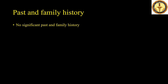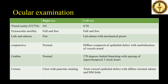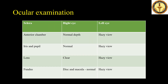His past and family history were non-significant. On systemic examination, he was conscious, oriented to time, place and person, and the rest of the examinations were within normal limits. On ocular examination, visual acuity in the right eye was 6/6; however, in the left eye it was 6/36. In the left eye there was significant lid edema with mechanical ptosis, diffuse conjunctival epithelial defects with marbleization of the vessels, 270 degrees of limbal blanching with sparing of the supero-temporal region for 3 clock hours, and total corneal epithelial defect with diffuse stromal edema and Descemet's membrane folds, precluding anterior segment, iris, lens, and fundus examination.